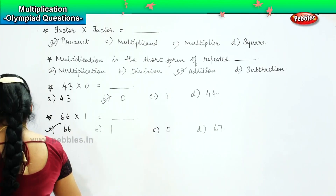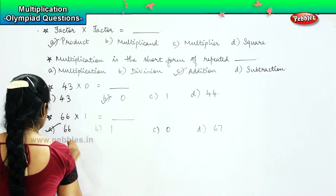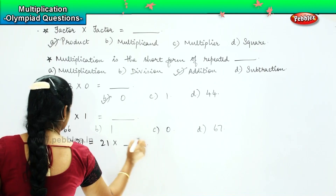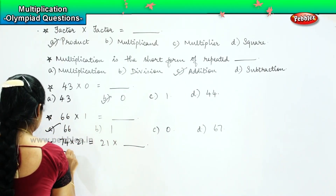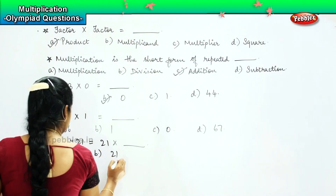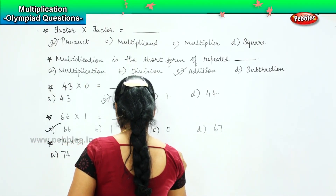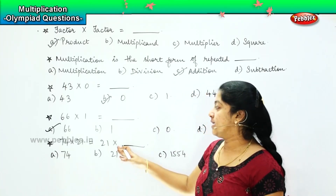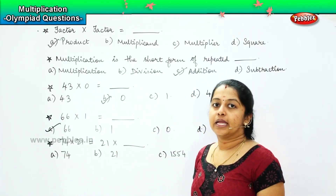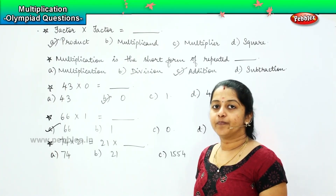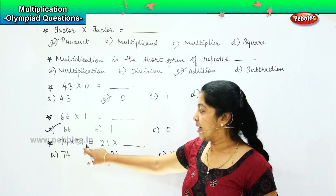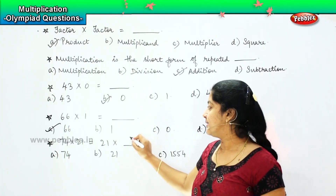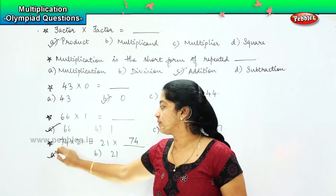Here is your next question: 74 into 21 is equal to 21 into dash. Your options are: A) 74, B) 21, C) 1554, and D) 1. This is the third property of multiplication — the product remains unchanged even if the order of the multiplicand changes. So 74 into 21 equals 21 into 74. Option A is correct.